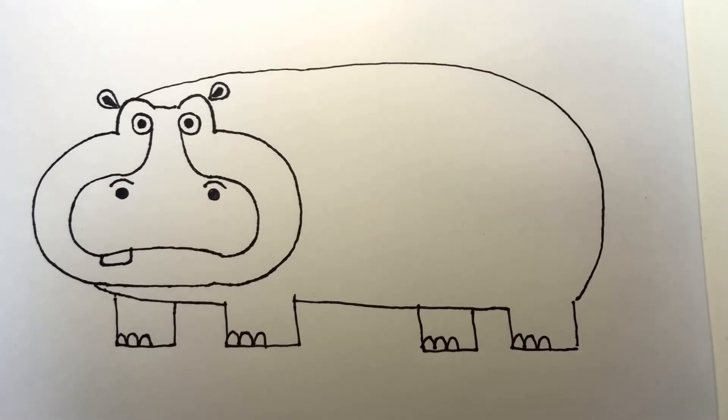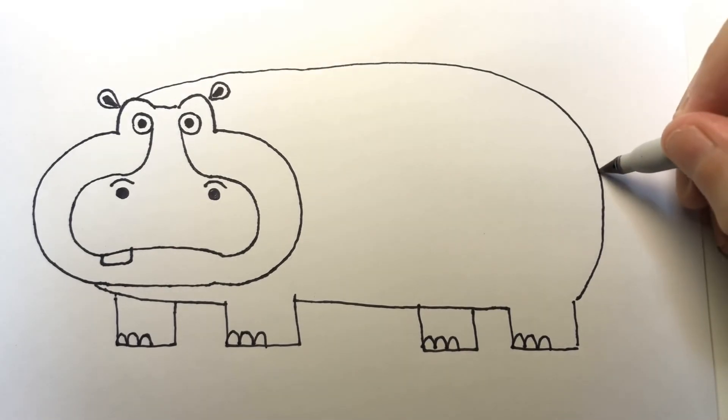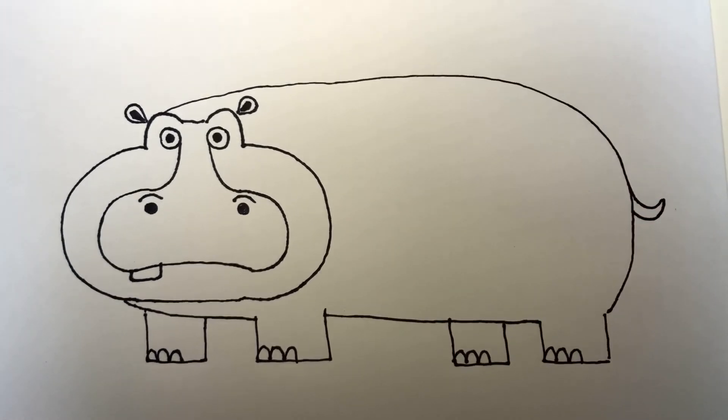There you go. I think we're missing something here. Oh! The tail. Just draw two slopes like that. And there you have it.